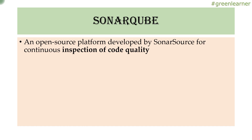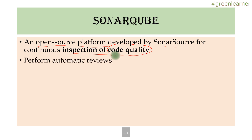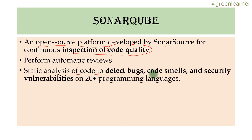SonarQube is an open source platform developed by SonarSource for inspection of code quality. It performs automatic reviews and asks you to fix minor errors and security vulnerabilities. It does this through static analysis of code to detect bugs, code smells, and code improvements. For example, if you were using Java 8 but writing in the style of Java 6 or 7 — not using lambdas where applicable — it can suggest you use a lambda instead of an anonymous class implementation.